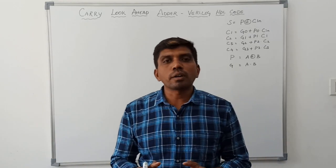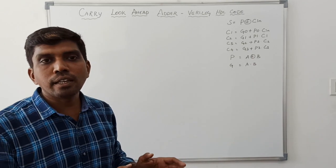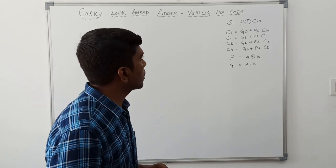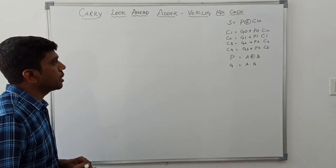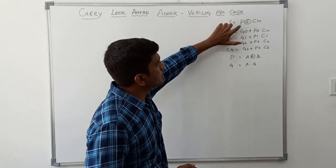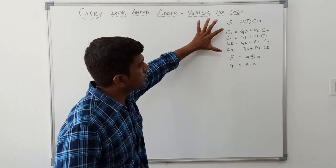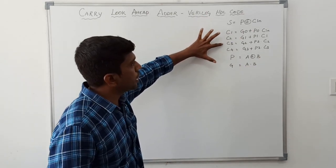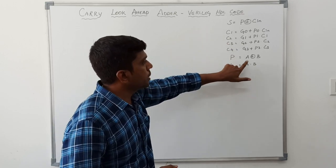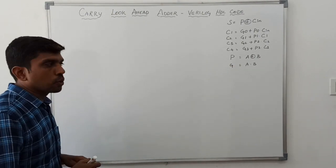So far we have discussed the block diagram of carry lookahead adder and the expressions for carry, sum, propagation, and generation. Now I am going to write the Verilog code for carry lookahead adder using these expressions. The sum expression is P XOR CIN. This expression is used to find C1, C2, C3, and C4. Propagation value is A XOR B and generation value is A AND B.